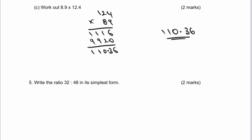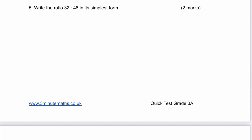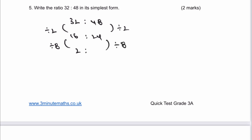Next is a ratio question: simplify 32 to 48. I divide both sides by 2 to get 16 to 24. Then I divide both sides by 8, since 8 divides into both 16 and 24, giving 2 to 3. In its simplest form the ratio is 2:3, worth two marks.